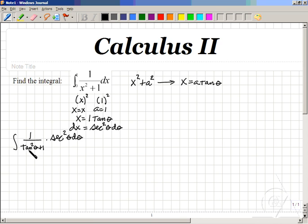Using trig identities, we recall that tangent squared plus 1 is the identity for secant squared theta. Apparently, the secant squared thetas will cancel, leaving the integral of 1 d theta.